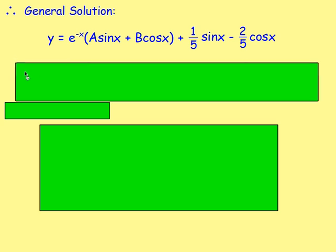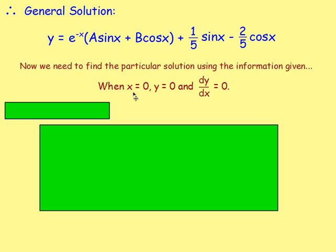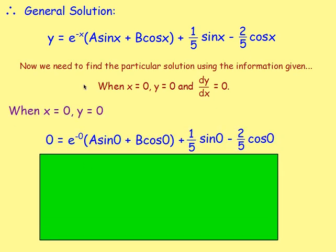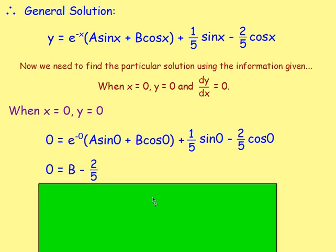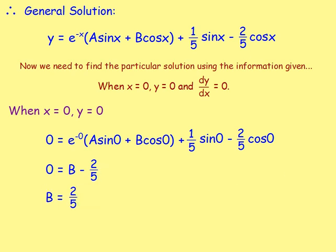Now we apply the initial conditions to find the particular solution. We're told when x=0, y=0 and dy/dx=0. Substituting x=0 and y=0: 0 = e^0(a sin 0 + b cos 0) + (1/5)sin 0 − (2/5)cos 0. Since sin 0 = 0 and cos 0 = 1, this gives 0 = b − 2/5, so b = 2/5.